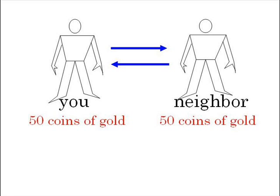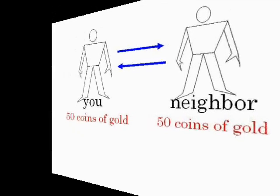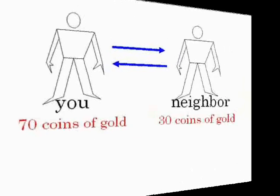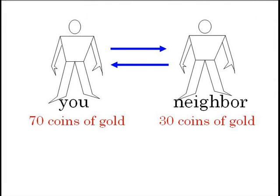Let's suppose you decide to make a profit and start selling more than you buy. What happens then? It means that your neighbor starts losing money. If you have now 60 coins of gold, your neighbor has 40. If you have 70, your neighbor has 30. It's impossible for everyone to get richer at the same time. If you get richer, it means your neighbor is getting poorer.